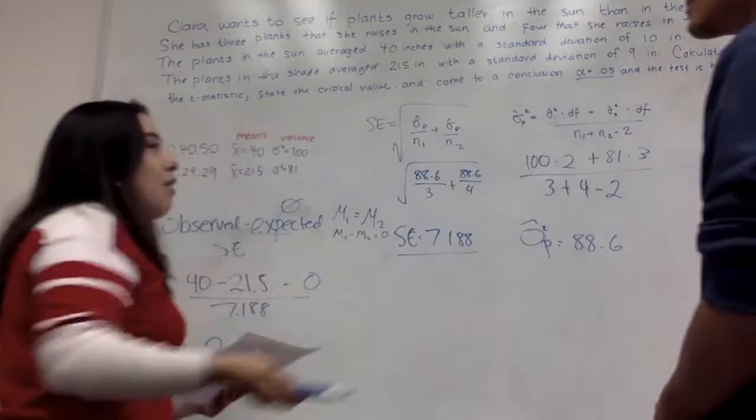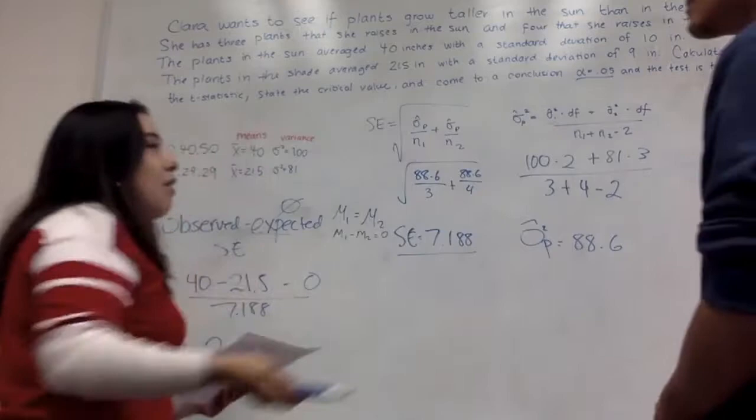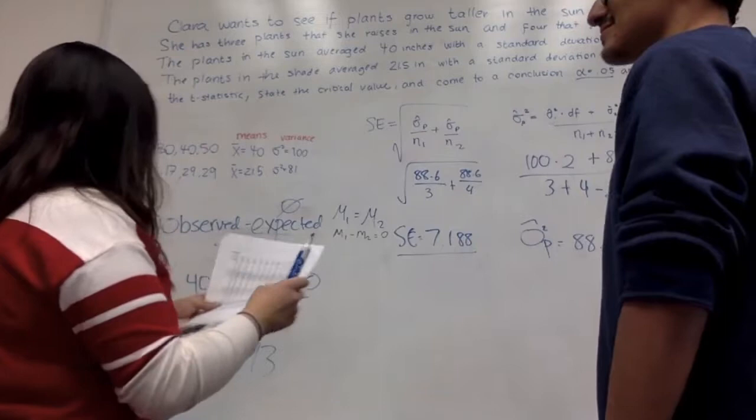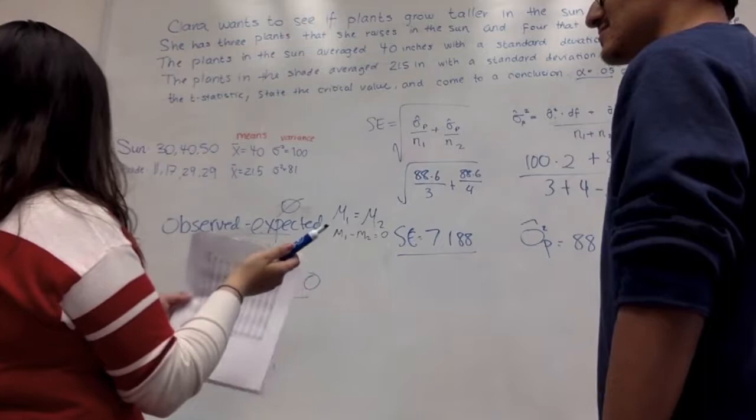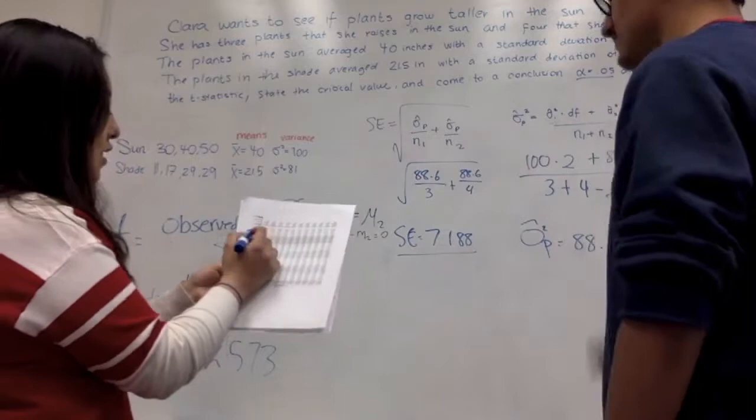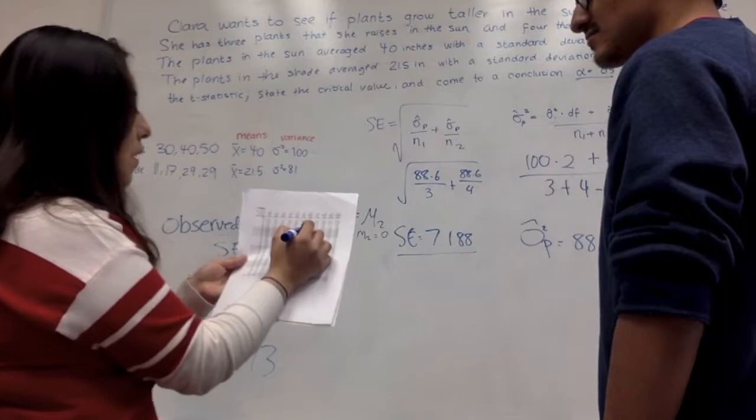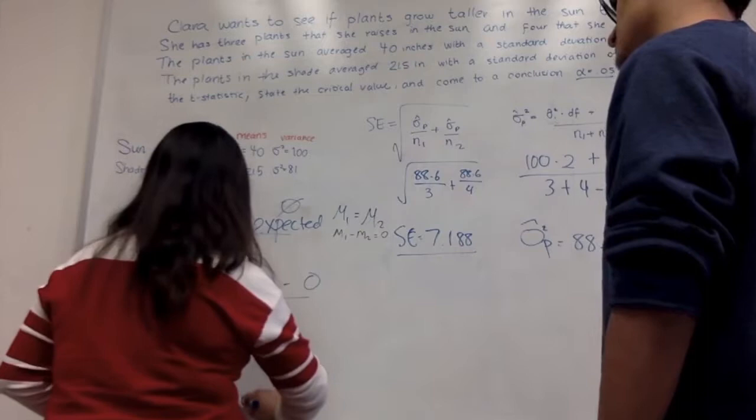So what we're going to do is we're going to look at our t-table. And our t-table says, we have to look first, our degrees of freedom, which is 7 minus 2, which is 5. So 5, and then it was 0.05, because it's two-tailed. So it should be our critical value, 2.571. And our degrees of freedom, we just said that right now, was 5.